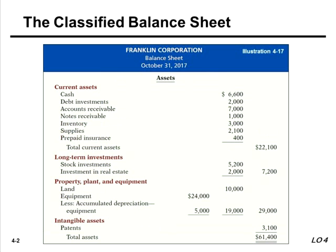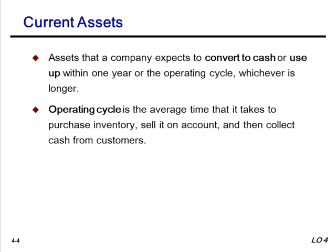Assets have to be listed in the order of liquidity — that is, the ease with which an asset can be converted to cash. So obviously cash always has to be listed first. Right under cash we have an account called debt investments, which could also be called marketable securities. Those are very short-term investments where companies put extra cash to get a higher rate of return than they would if they just put the cash in the bank.